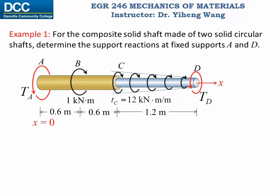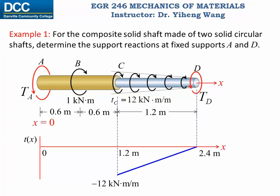To find the resultant torque, I will write the load intensity as a function of x. The load intensity function is negative because the torque is clockwise about the x-axis. Based on the linear equation, we can write T = 10x − 24 kNm/m, which we can integrate to find the resultant torque. We still need this load intensity function for the later internal torque analysis, so it is useful to write it out now.